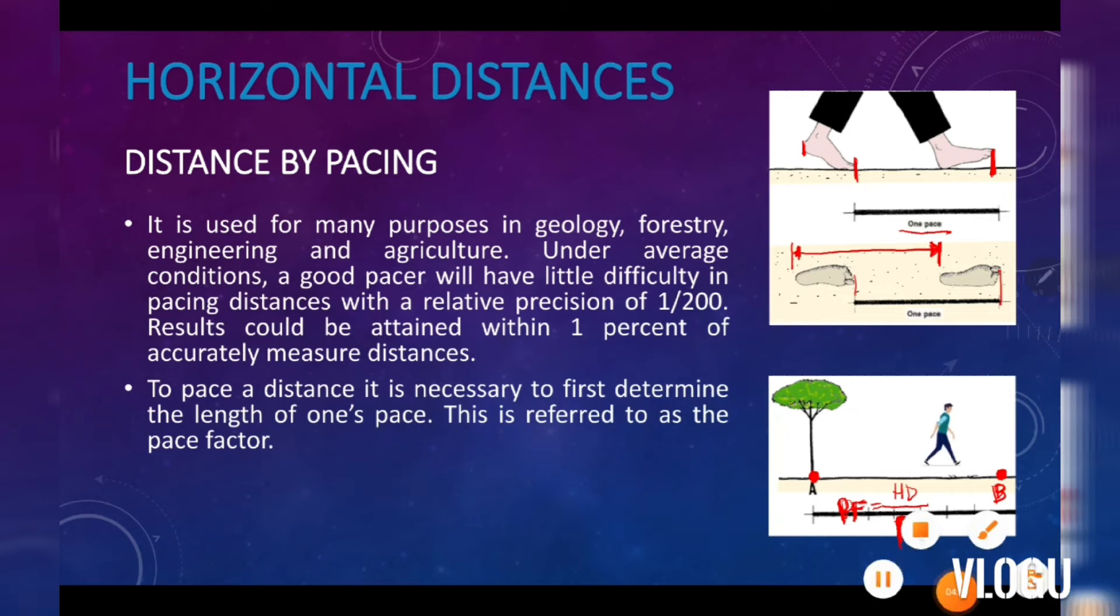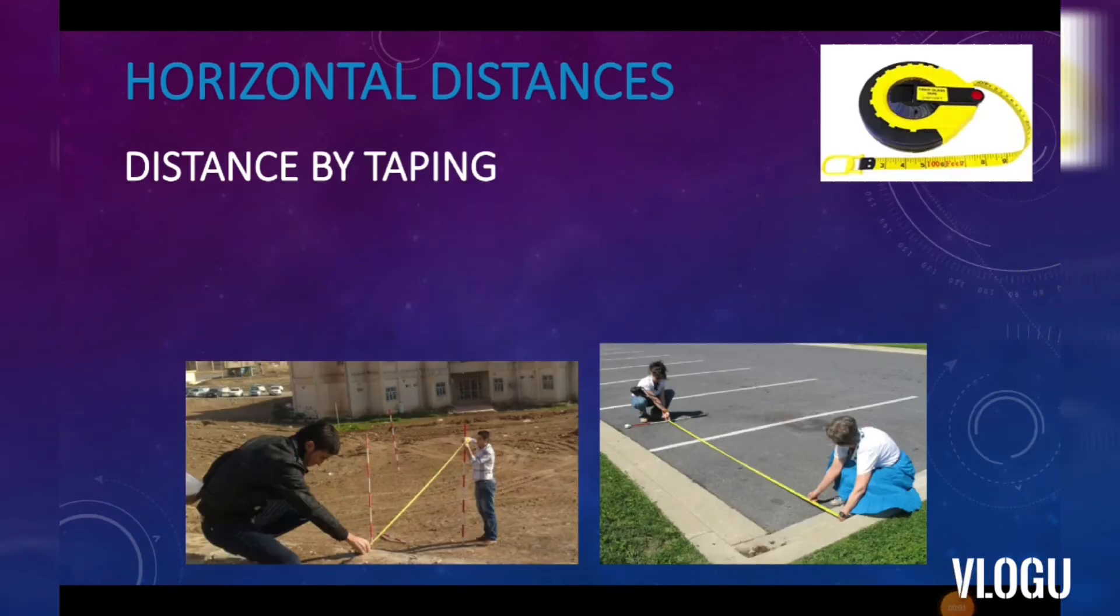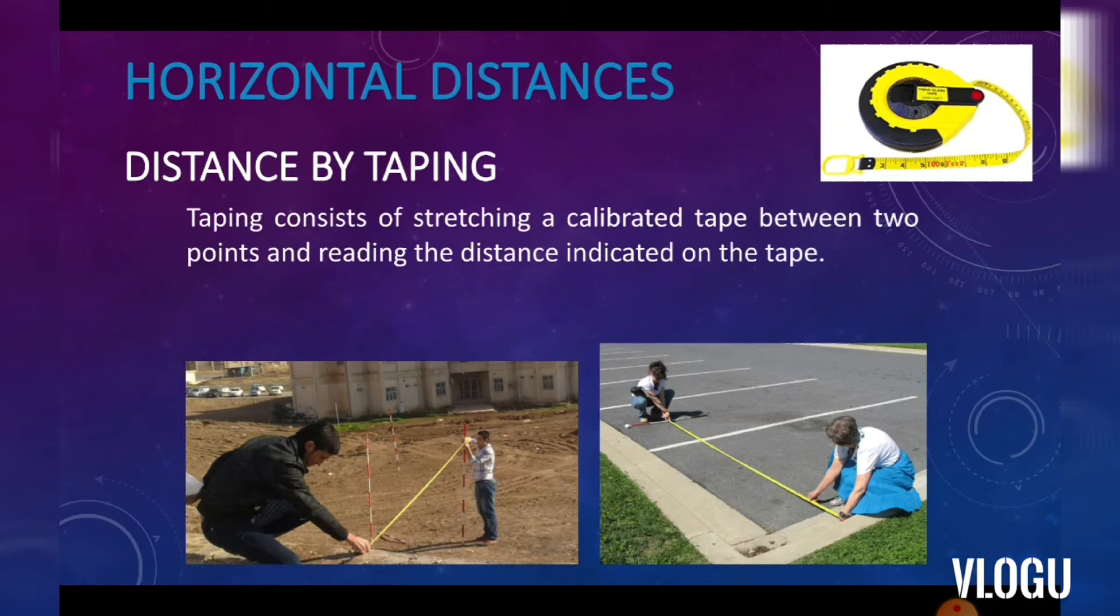Next is distance by taping. After pacing, we must know how to use the measuring tape. This is another method in determining the horizontal distances. Taping consists of stretching a calibrated tape between two points and reading the distance indicated on the tape.